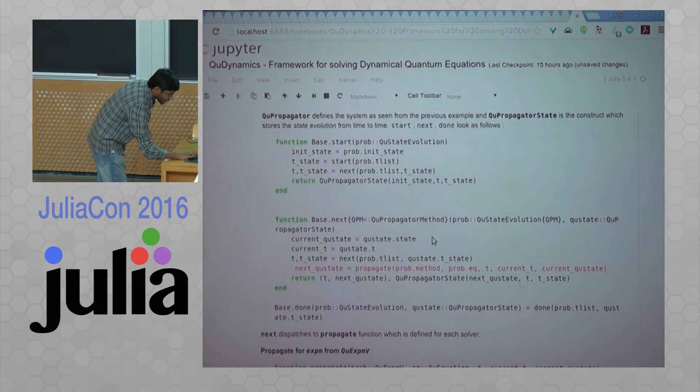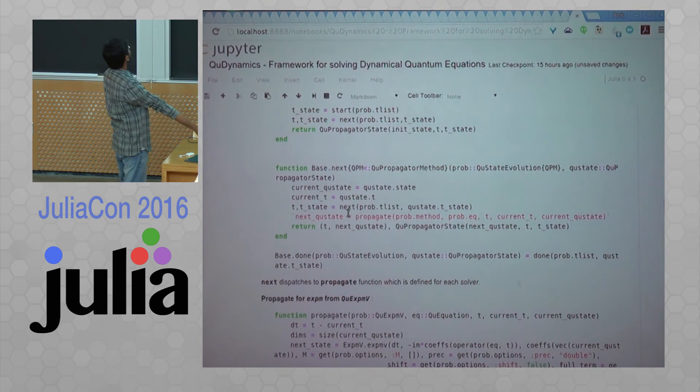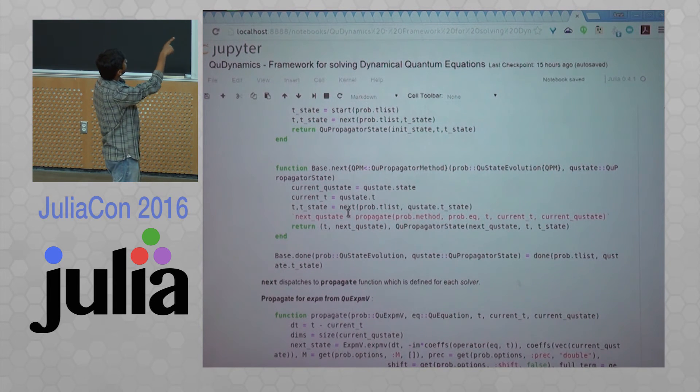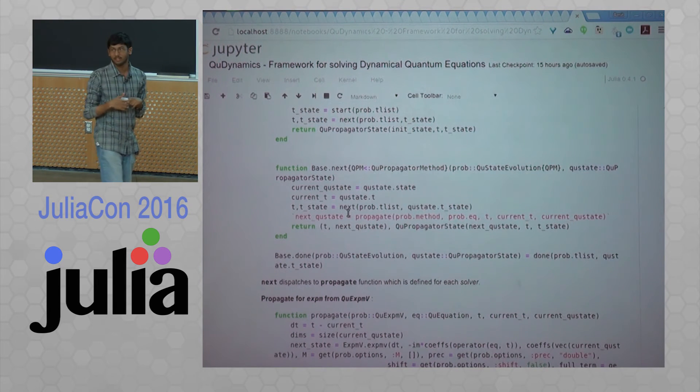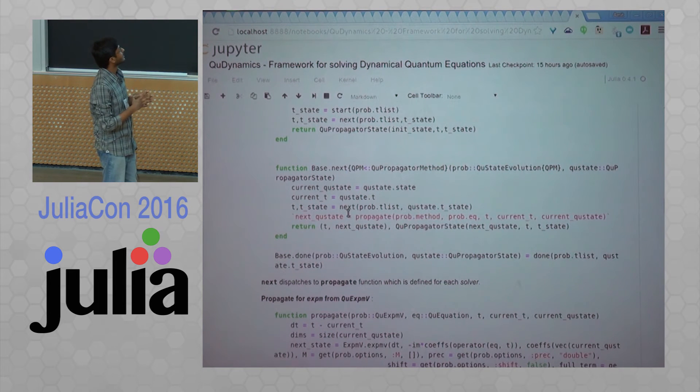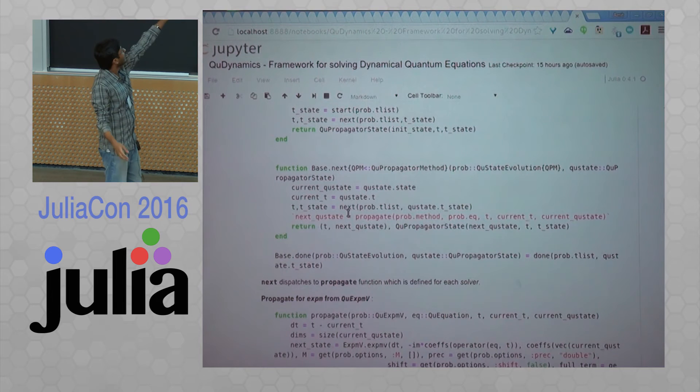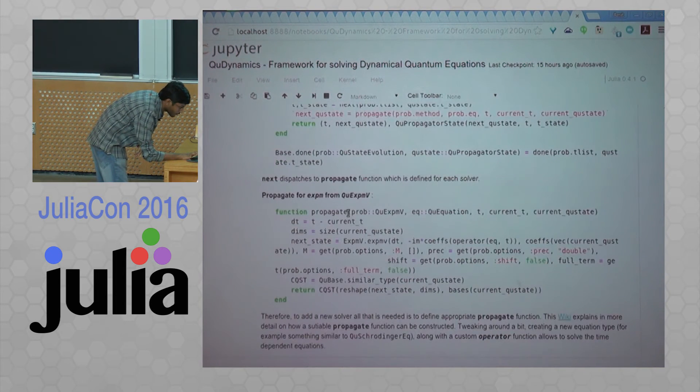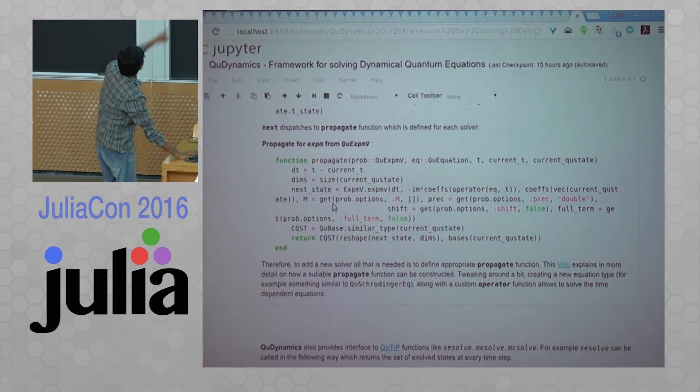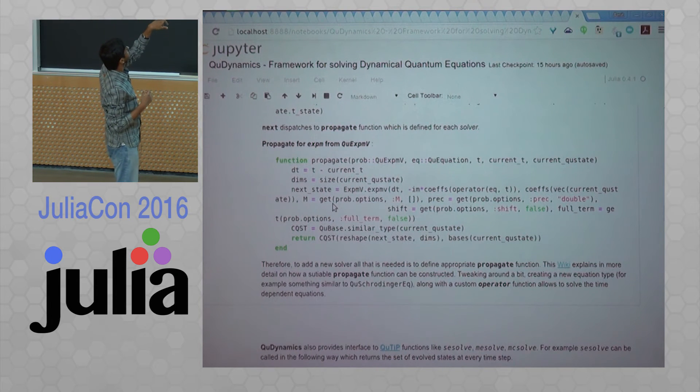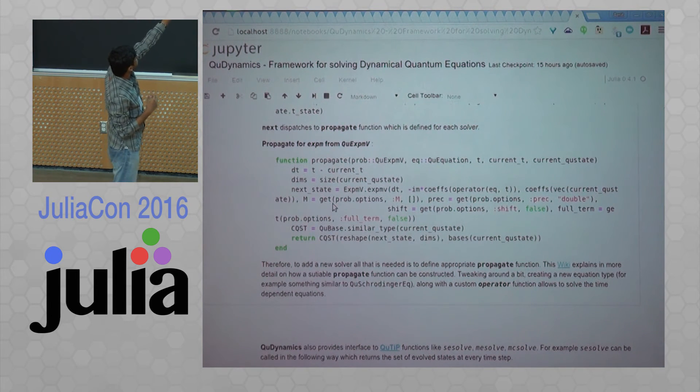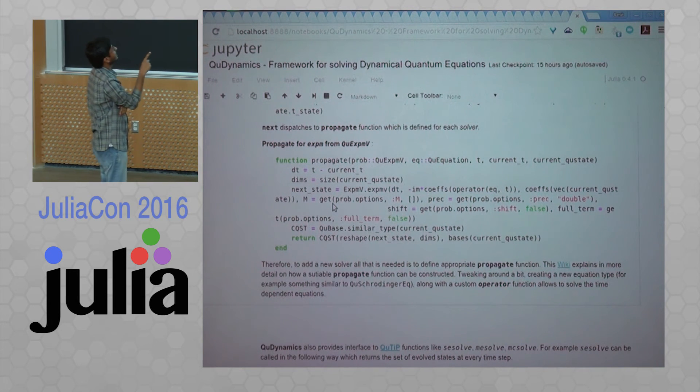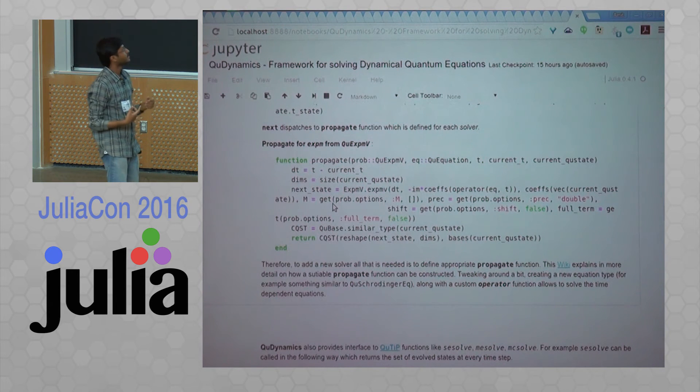And then if you look at the next function which we have extended from the base, there is a propagate which is marked in red. That propagate is actually going to dispatch it to different methods. If you want to write a new method, all you need to define is a propagate function. That is it. It is going to do everything for you: define your function, propagate, and then with a method. And then it is going to use that method to evolve your states. This is the propagate function for the expm from Qexpmv package. You just define, you take expmv from expmv and then you look at the operators that are being passed. You just need to define this function for your solver and it is going to solve the system using your solver.